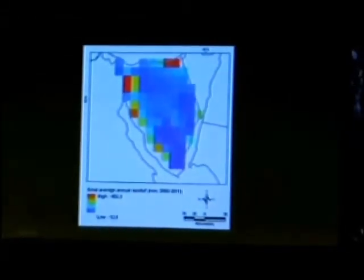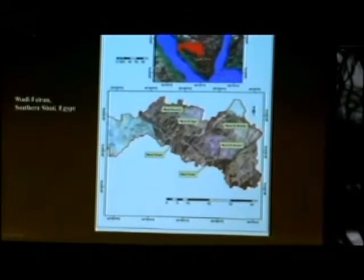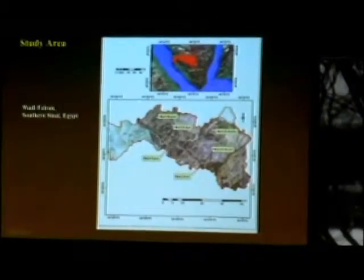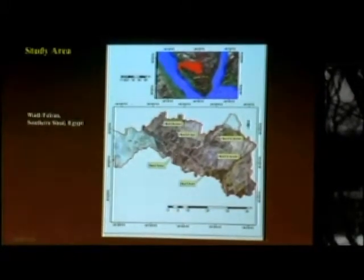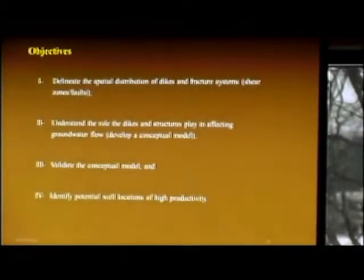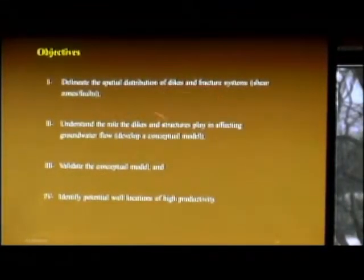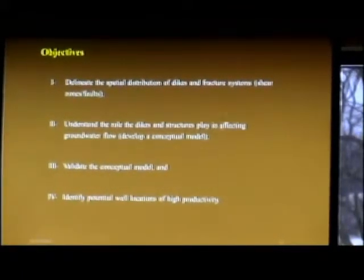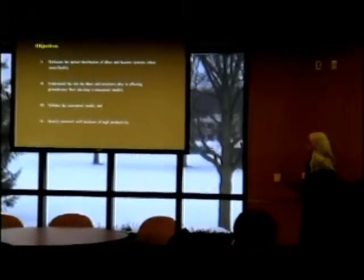This is a TRMM image showing precipitation for the study area in southern Sinai. This map shows the study area located in southern Sinai, Egypt, in a region called Wadi Fran, which consists of several smaller wadis. The objectives of this study are to delineate the spatial distribution of dikes and fracture systems like shear zones and faults, to understand the role these structures play in affecting groundwater flow by developing a conceptual model, to validate that model, and finally to identify potential well locations of high productivity.